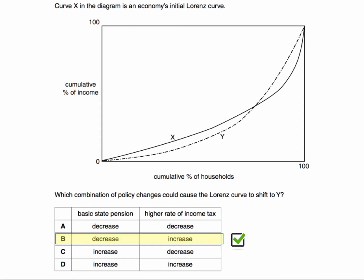The correct answer is B: a fall in the basic state pension and an increase in the higher rate of income tax. The key to understanding the answer here is to think about what has actually happened to the Lorenz curve, initially X, now drawn as Y. To help us, I've drawn in the line of perfect equality. We know that the further the Lorenz curve is away from the line of perfect equality, the greater is the level of inequality.